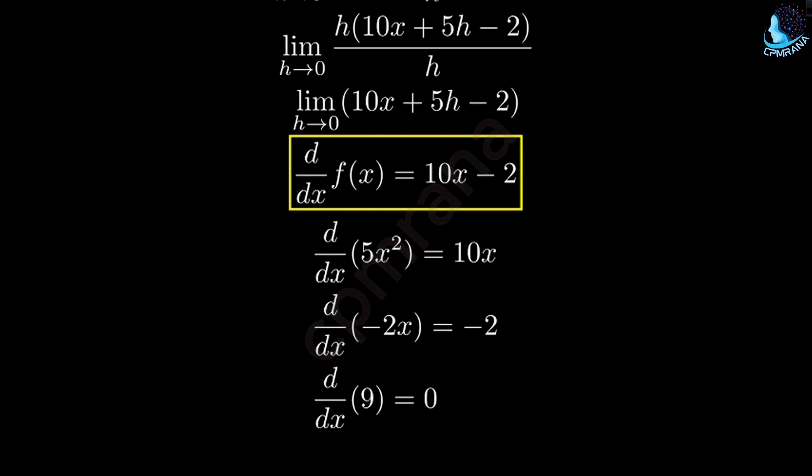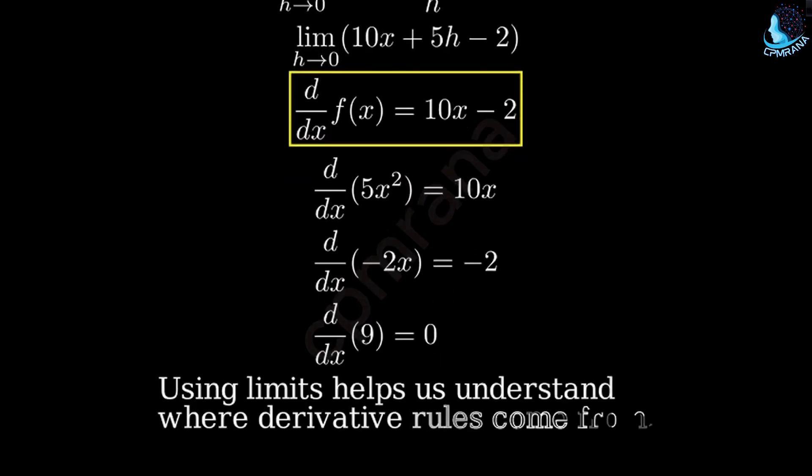The derivative of a constant is 0, so the 9 disappears. And that's how we find the derivative using the limit definition. This method, while more involved than using derivative rules, helps us understand where those rules come from.